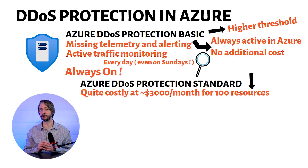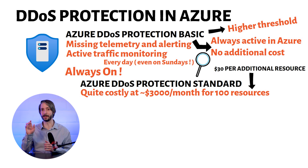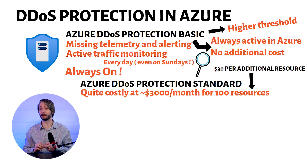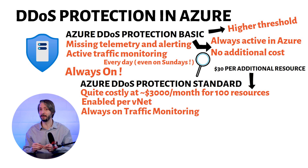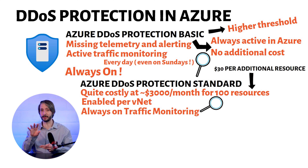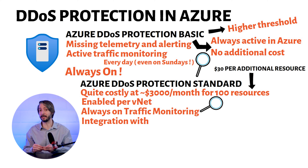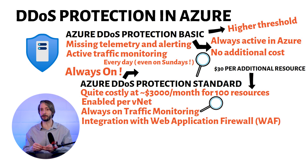Additional resources are $30 a month per resource on top of the base fee. DDoS Protection Standard is enabled per VNet and automatically protects all resources within it. It has always-on traffic monitoring where traffic patterns are monitored 24/7, looking for indicators of DDoS attacks and mitigating them when found. It also integrates with the Web Application Firewall in Azure, providing additional protection since DDoS protection operates at layers 3 and 4, while the WAF operates at layer 7.